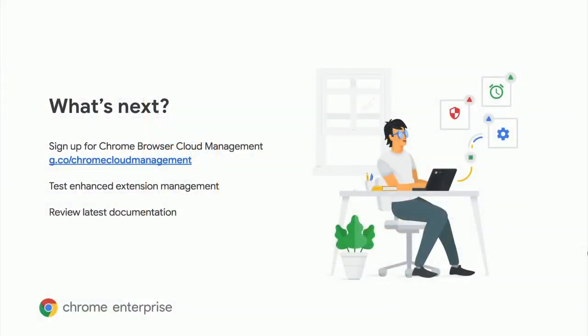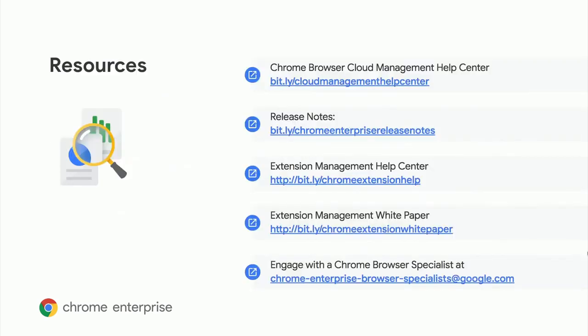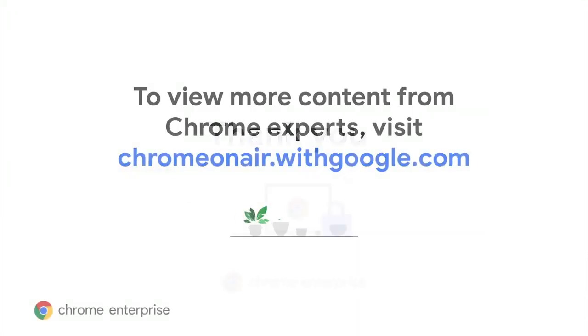So what's next? First, head over to g.co/chrome-cloud-management to sign up for Chrome Browser Cloud Management. Second, test enhanced extension management for your enterprise. And finally, check out all of the latest documentation for step-by-step instructions on how to bring these best practices to your organization. The extension management white paper goes into more depth about implementing extension permission policies. Thank you for tuning in — please visit Chrome on Air with Google.com for more content from Chrome Enterprise experts.